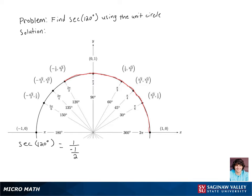We remember that dividing by a fraction is the same as multiplying by its reciprocal, so we get our final answer of negative 2.